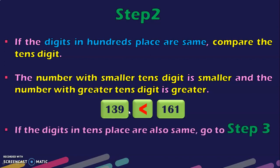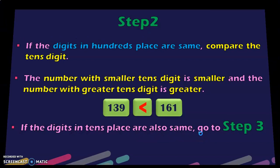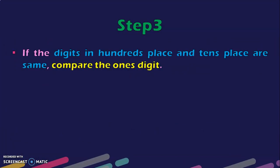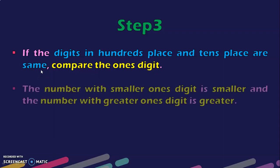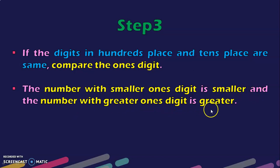Suppose you have two 3-digit numbers where the 100s place and also the 10s place are the same — you go to step 3. If the digits in the 100s place and 10s place are both the same, next you jump to the 1s digit. The number with the smaller 1s digit is smaller and the number with the greater 1s digit is greater. The rule is always the same, but for a 3-digit number you first look at the 100s place, then the 10s place, then the 1s place.